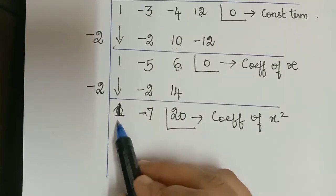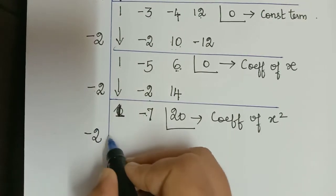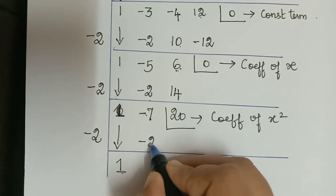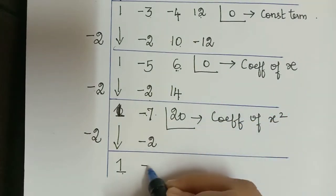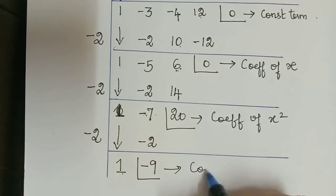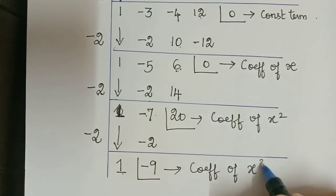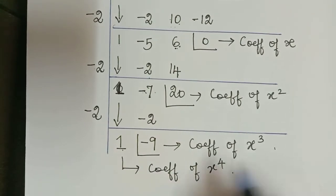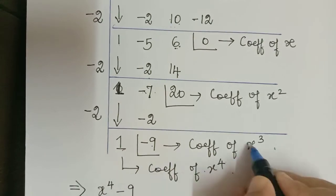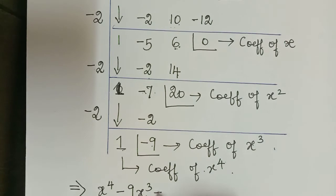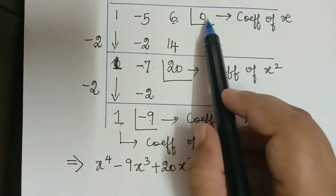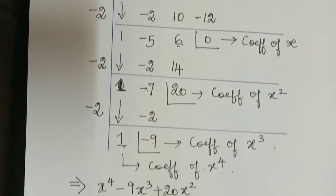Again there are two more terms, so we do it by negative 2 once more. The 1 comes down; 1 multiplied with negative 2 is negative 2. Then negative 7 and negative 2 give negative 9, which is the coefficient of x to the power 3, and this 1 is the coefficient of the x power 4 term. Therefore the transformed equation is x to the power 4 minus 9x cubed plus 20x squared equals 0, with no x term and no constant term.